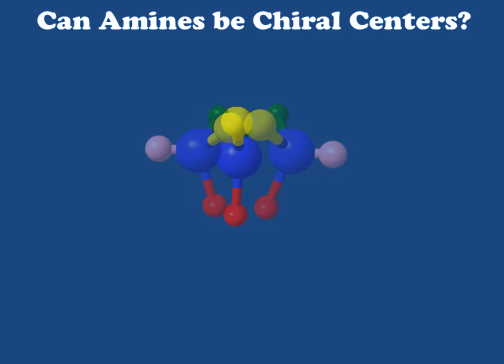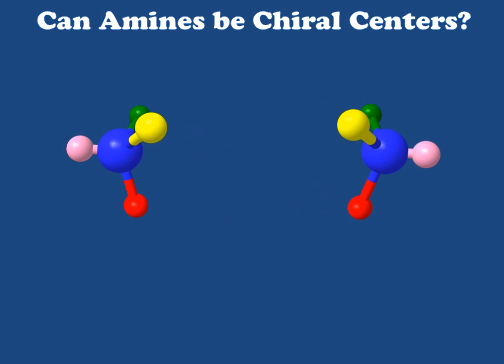If this exchange happens rapidly on the time scale of our experiments in the lab, we'll have a mixture of these two-handed versions of our nitrogen molecules, no matter what we do. Even if we could isolate one of the two, it would rapidly begin interconverting with the other enantiomer. Which means that although amines may be technically chiral centers, it's very difficult to make an enantiomerically pure sample of one, and only in rare cases do we see this happen. I hope this has answered your question, and we'll see you next time we upload.